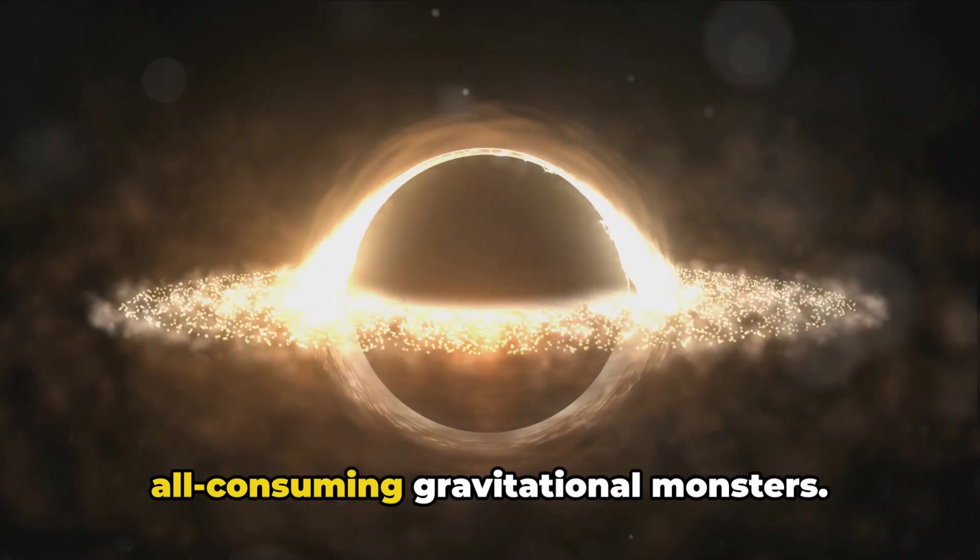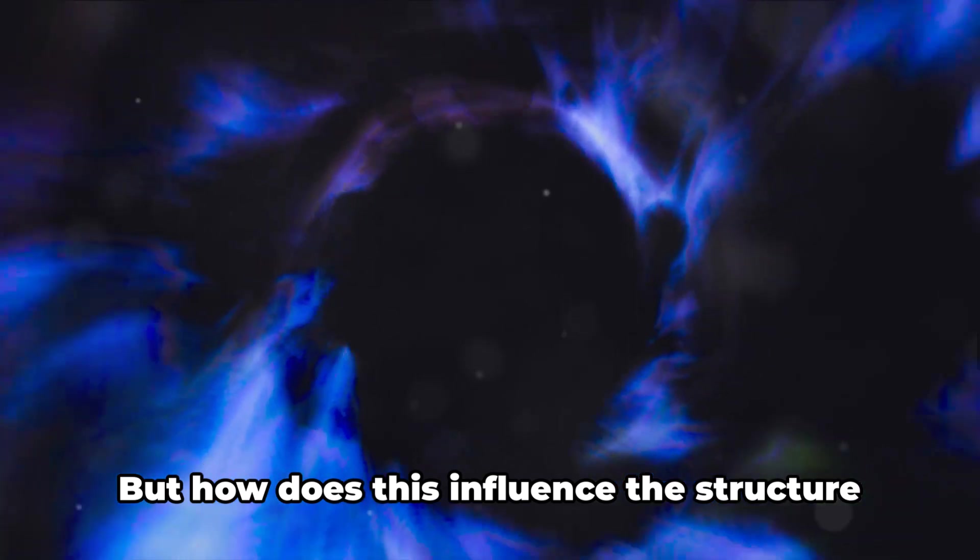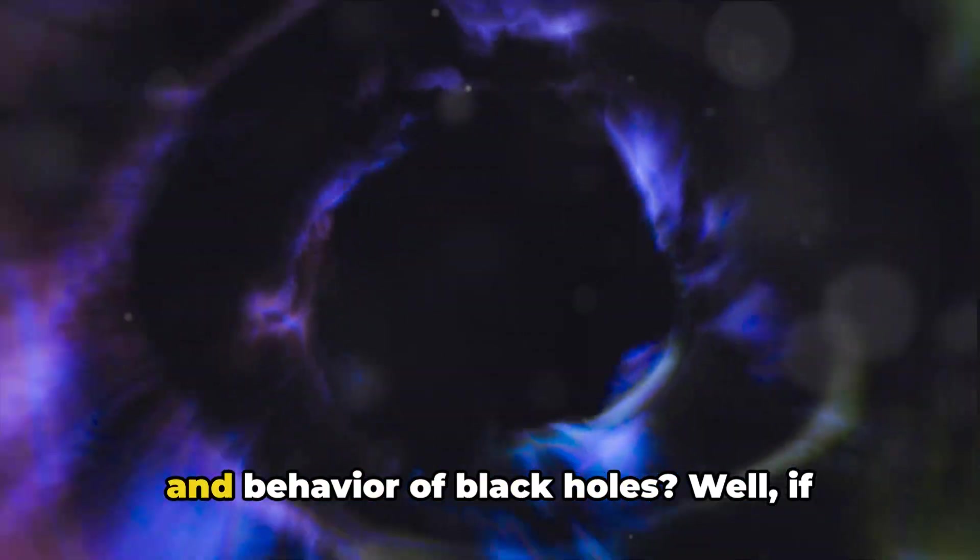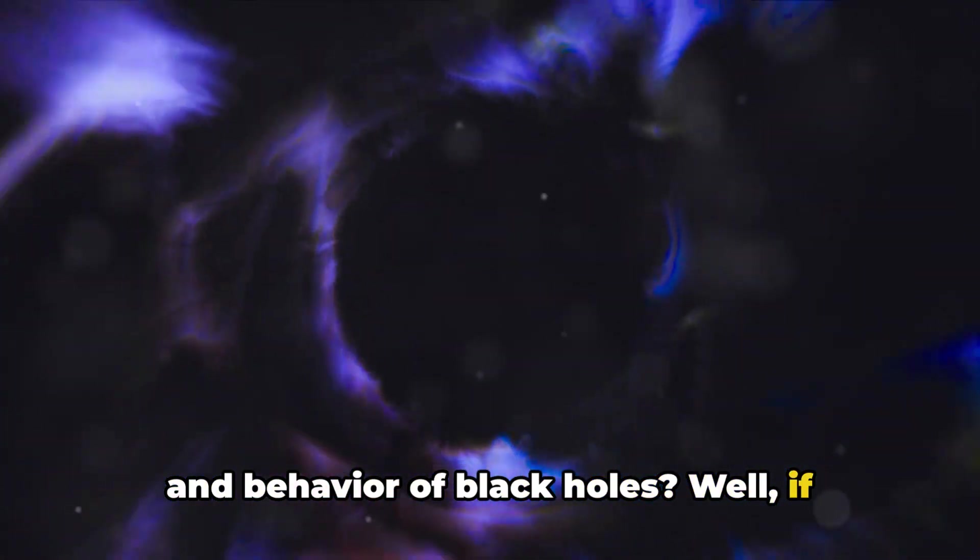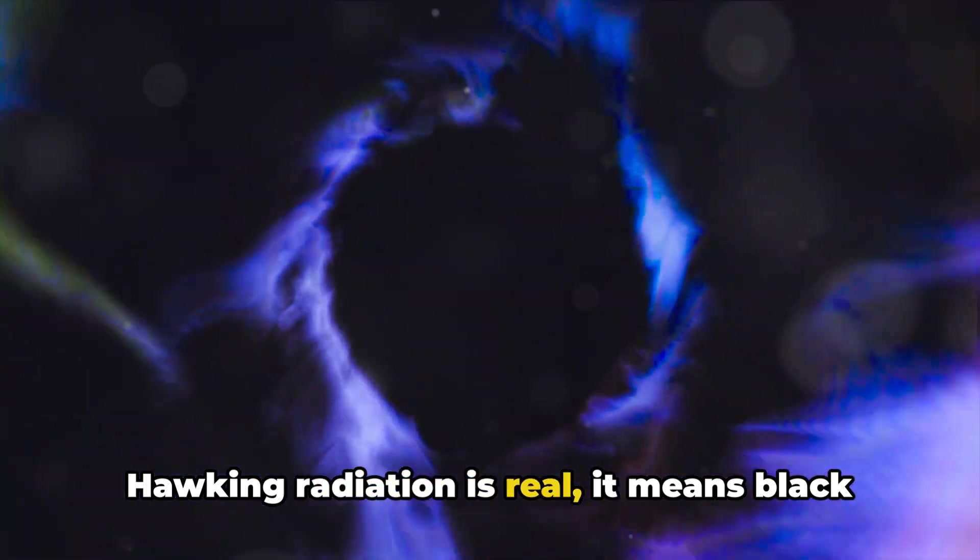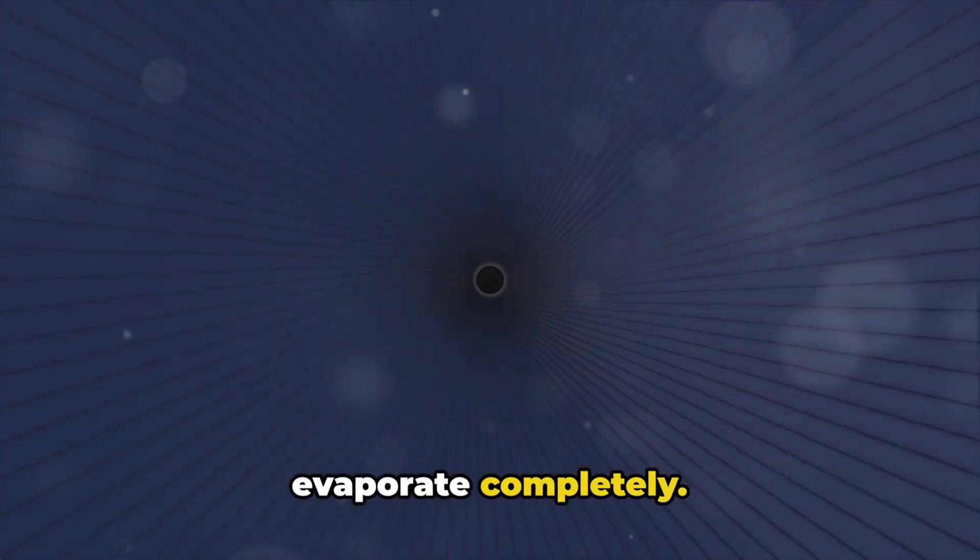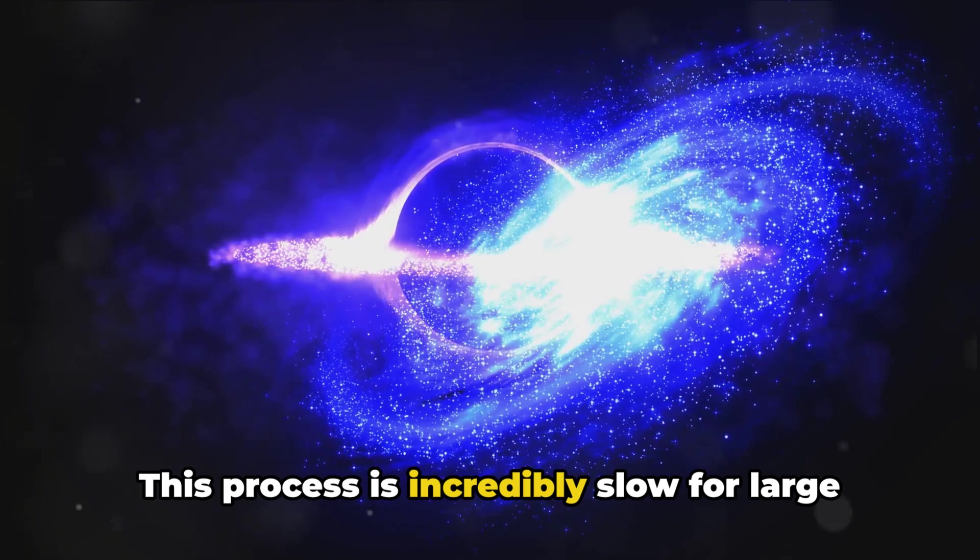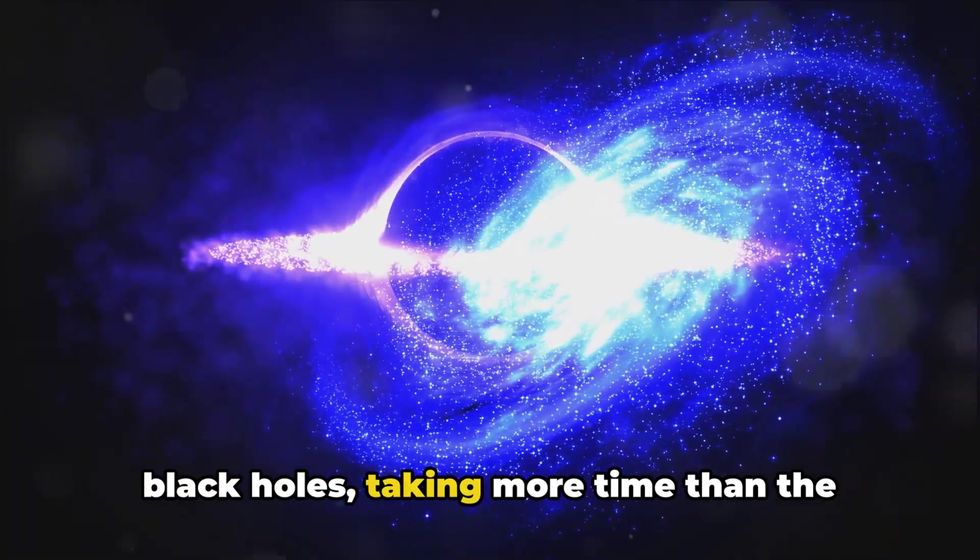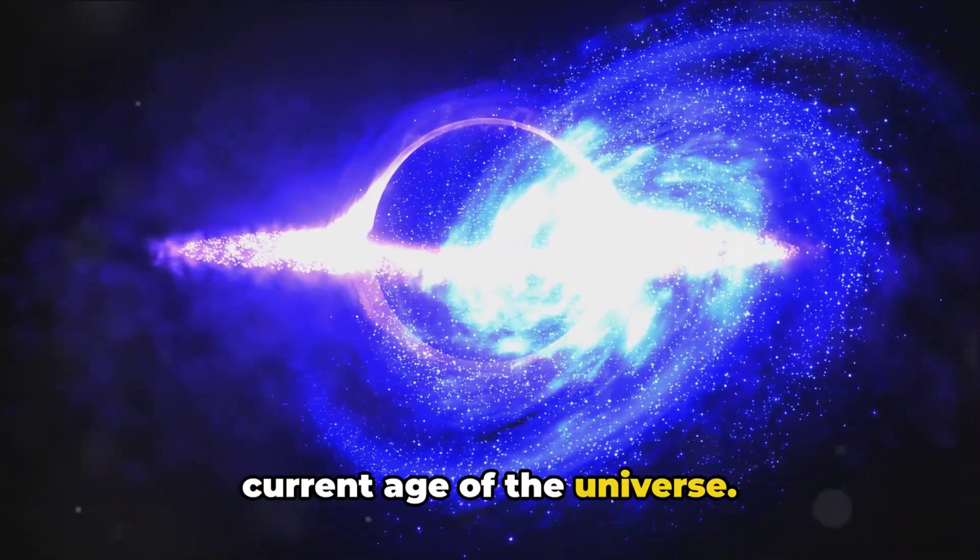This is a radical departure from the traditional view of black holes as all-consuming gravitational monsters. But how does this influence the structure and behavior of black holes? Well, if Hawking radiation is real, it means black holes can shrink and even eventually evaporate completely. This process is incredibly slow for large black holes, taking more time than the current age of the universe.